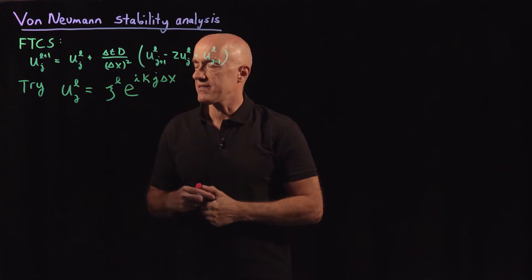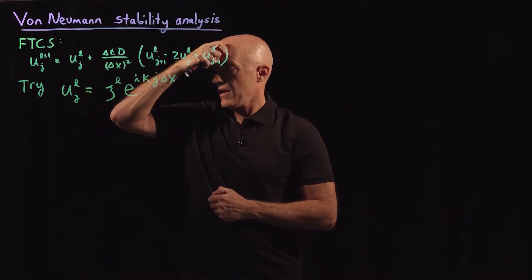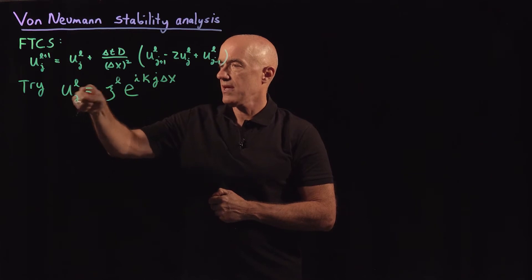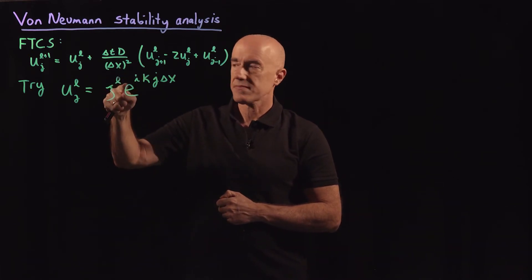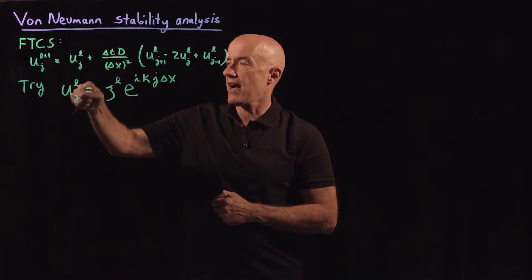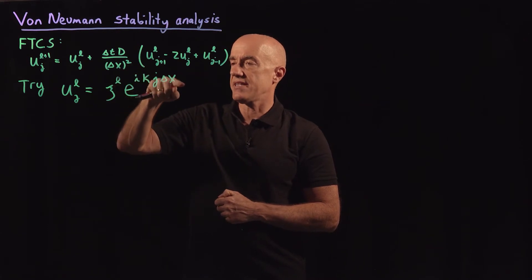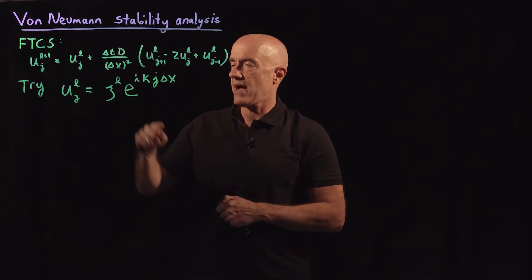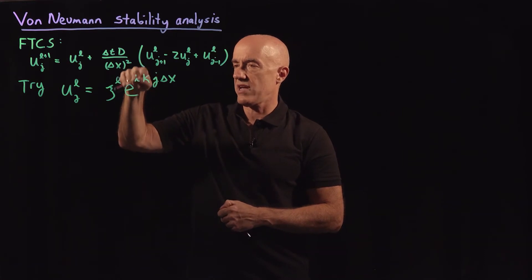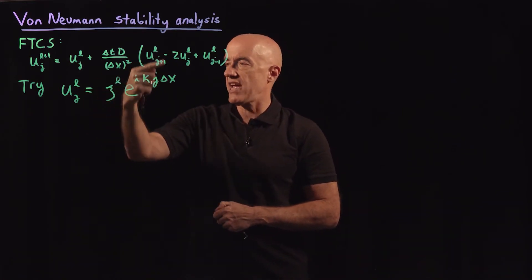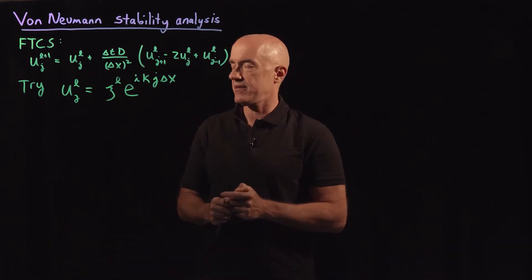Let me break this down. U at grid point J at time step L equals ξ — a parameter in our ansatz — raised to the Lth power. Note that this L is the time step index, while this L in ξ^L is the actual Lth power. This is multiplied by e^(iKJΔx), where i is the imaginary unit (square root of minus one), K is the wave number (also a parameter), J is the grid point index, and ΔX is the grid spacing.